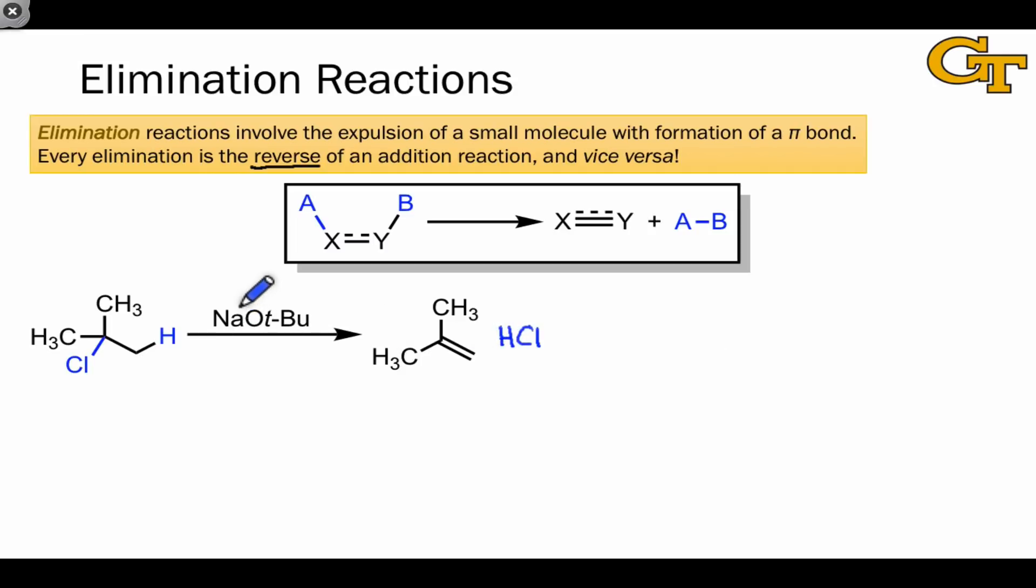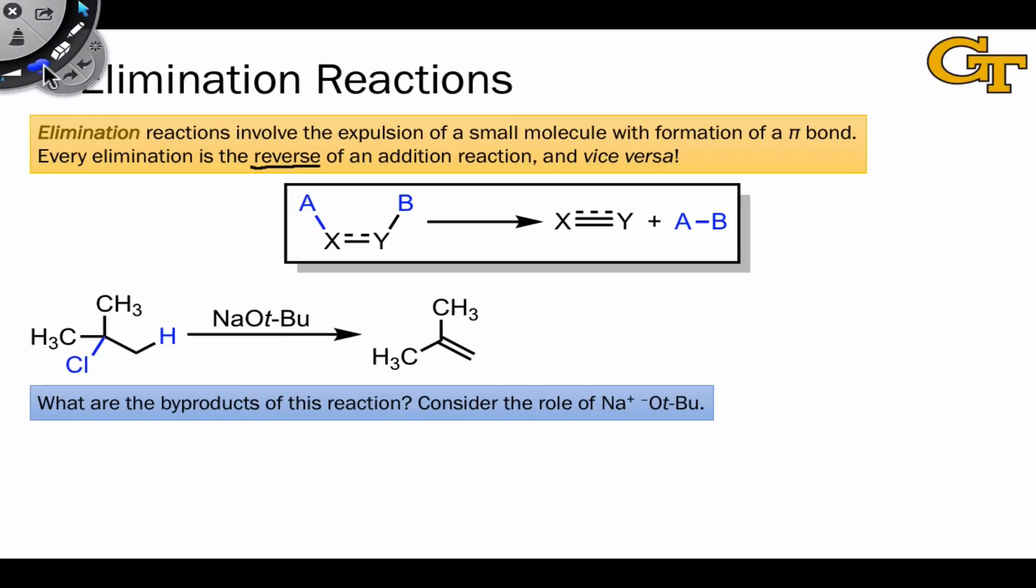Given we're under reaction conditions where the strongly basic O-tert-butyl anion is present. What, then, are the byproducts of this reaction? Well, notice, as in the addition case, that the electrons that make up the new pi bond in the product had to come from either A or B.